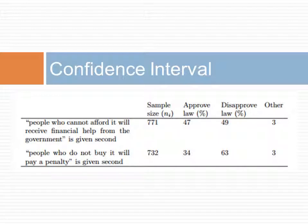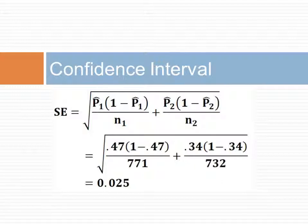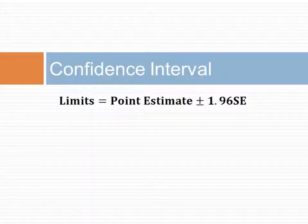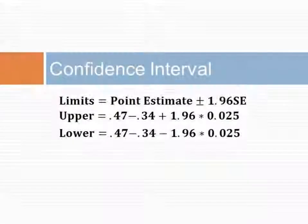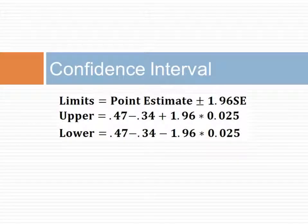Let us redo the above example, but this time by calculating a 95% confidence interval. We start with calculating the standard error, which we had computed when calculating the denominator of the z value. The standard error for the difference of the rates is calculated at 0.025. The confidence interval is calculated as the point estimate plus or minus 1.96 times the standard error, where 1.96 is the z value for where approximately 95% of the data lie. The point estimate is the difference of the two rates and the standard error is 0.025. Note that the confidence interval does not include zero, and therefore using the 95% confidence interval, the hypothesis of no difference in the subjects' approval rates is rejected.